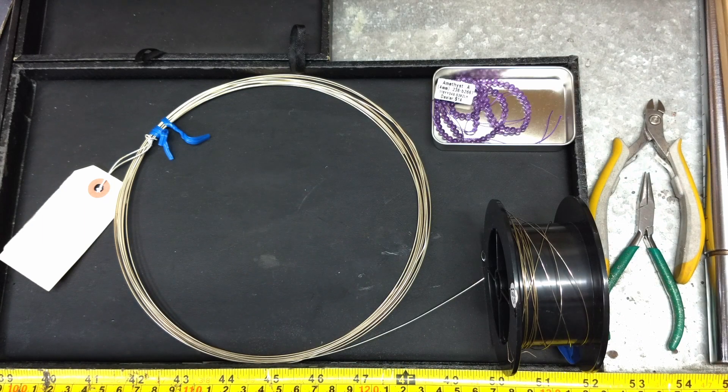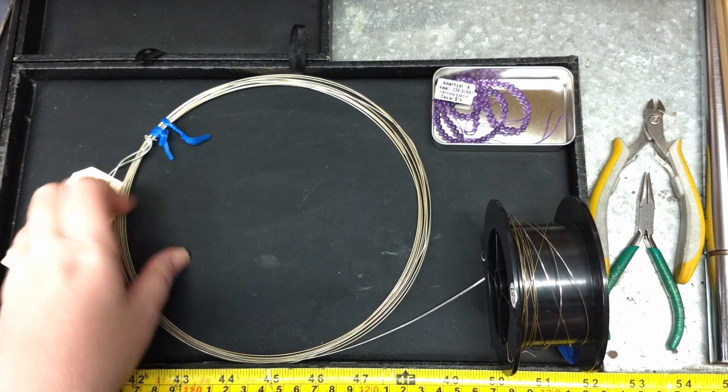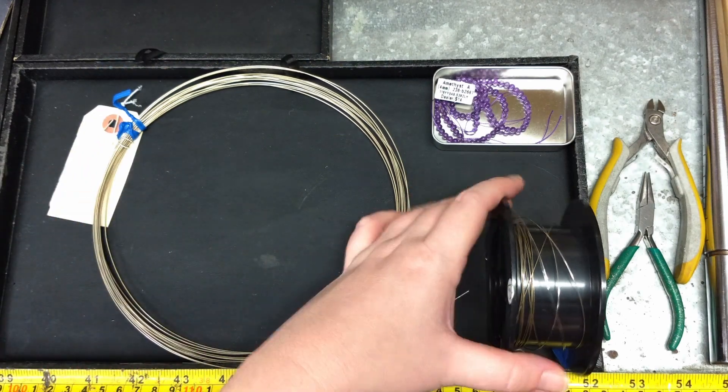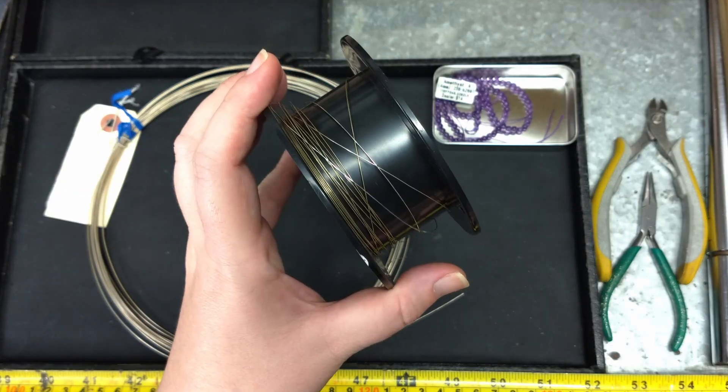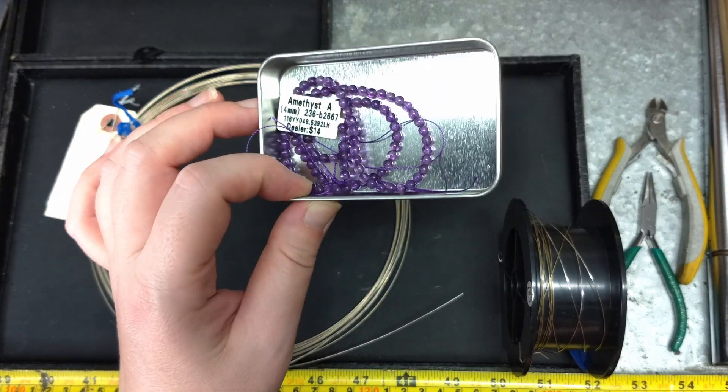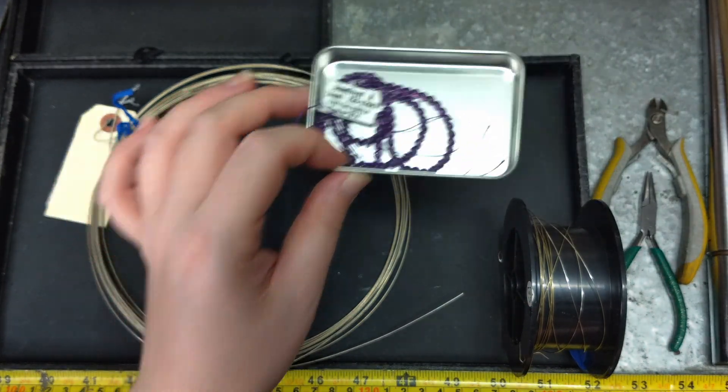For this project I will be using 20 gauge round sterling silver dead soft wire and 26 gauge wire for the wire weaving. You will also need a bead. I'm using a 4 mm round amethyst gemstone bead.